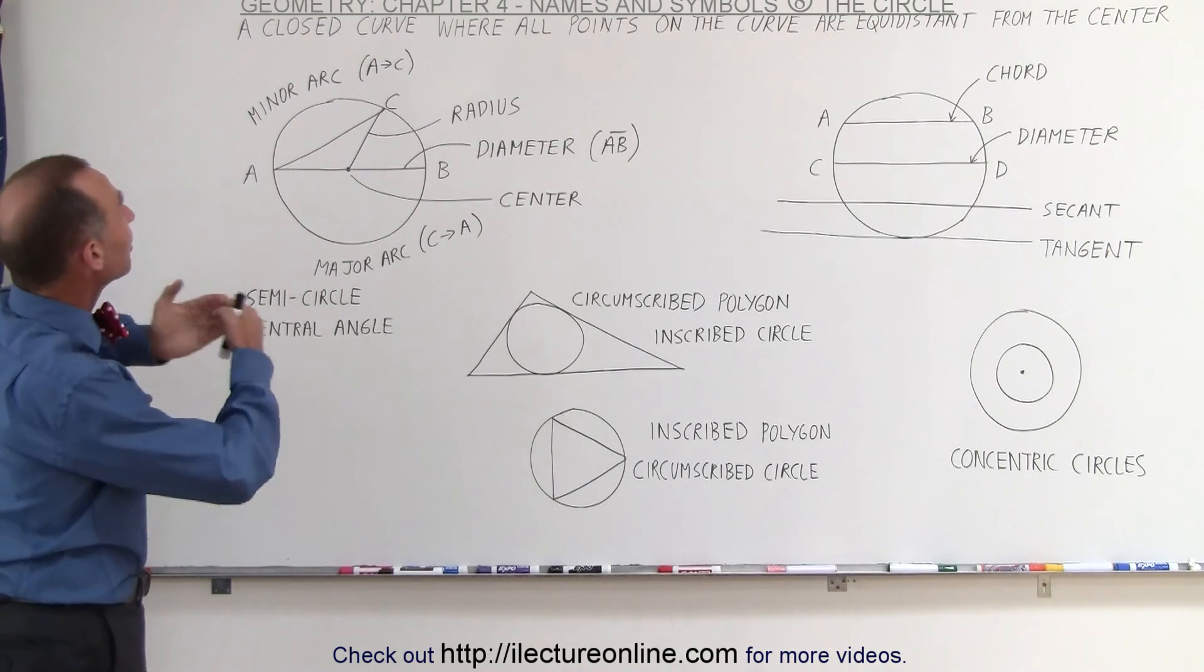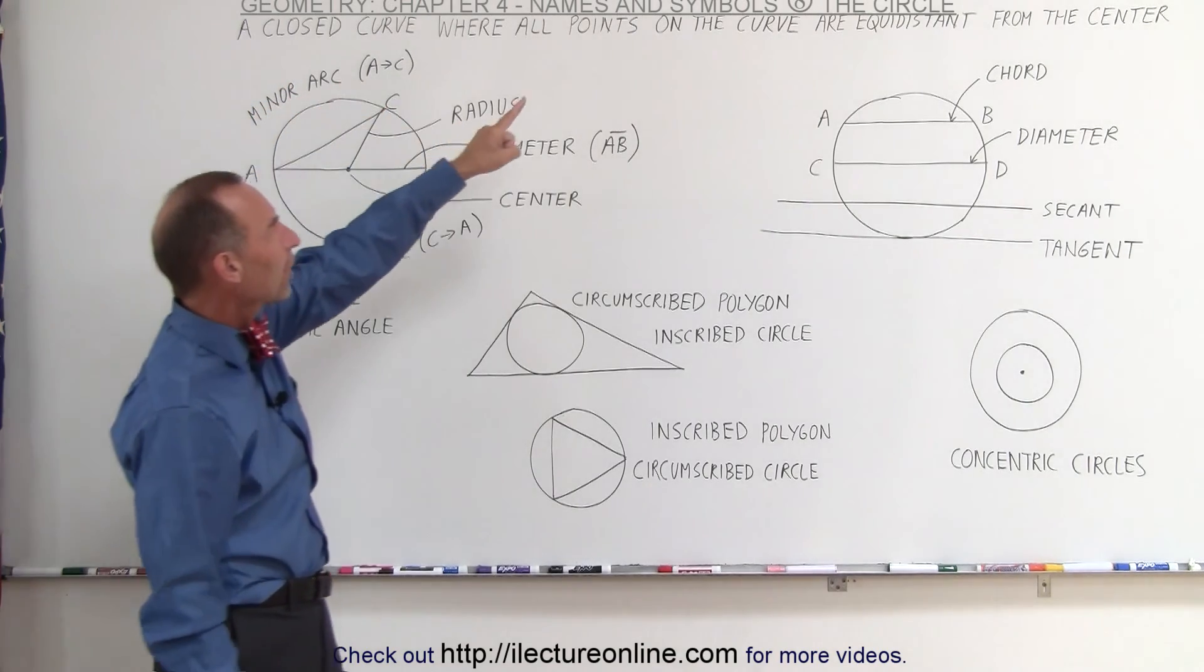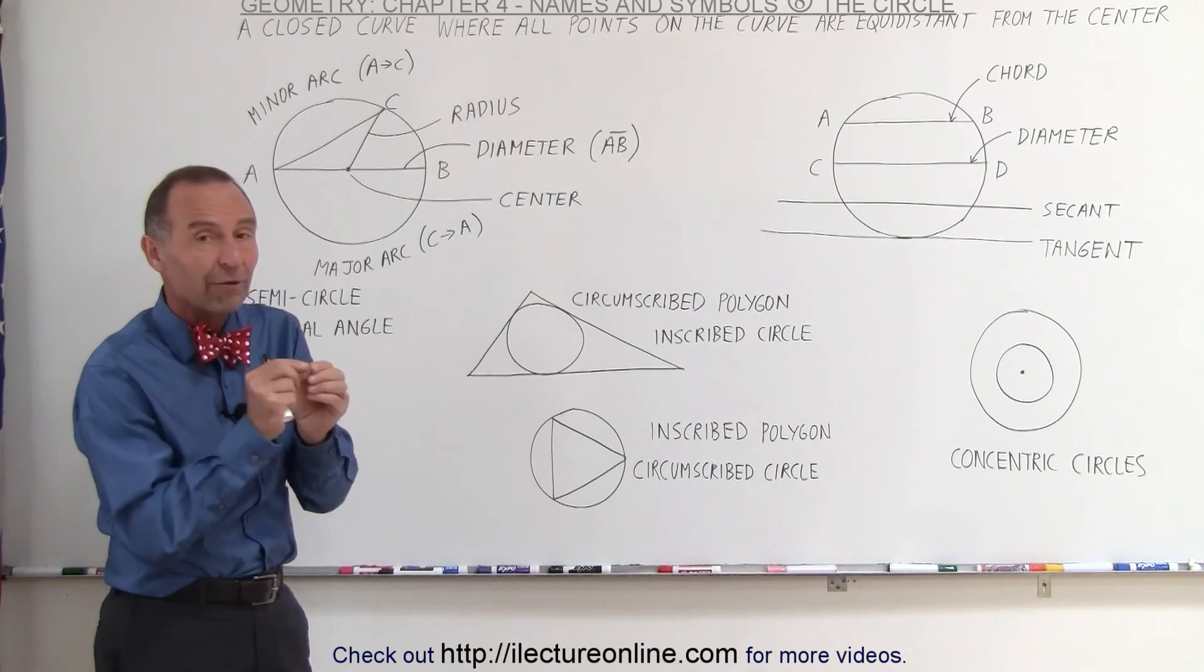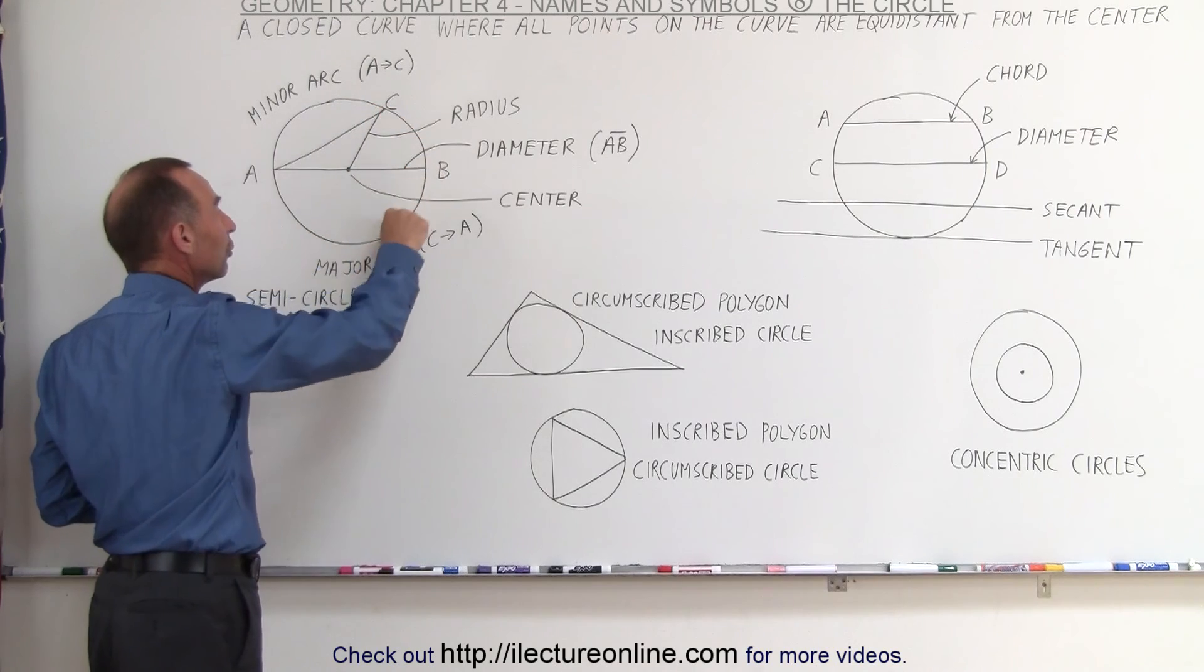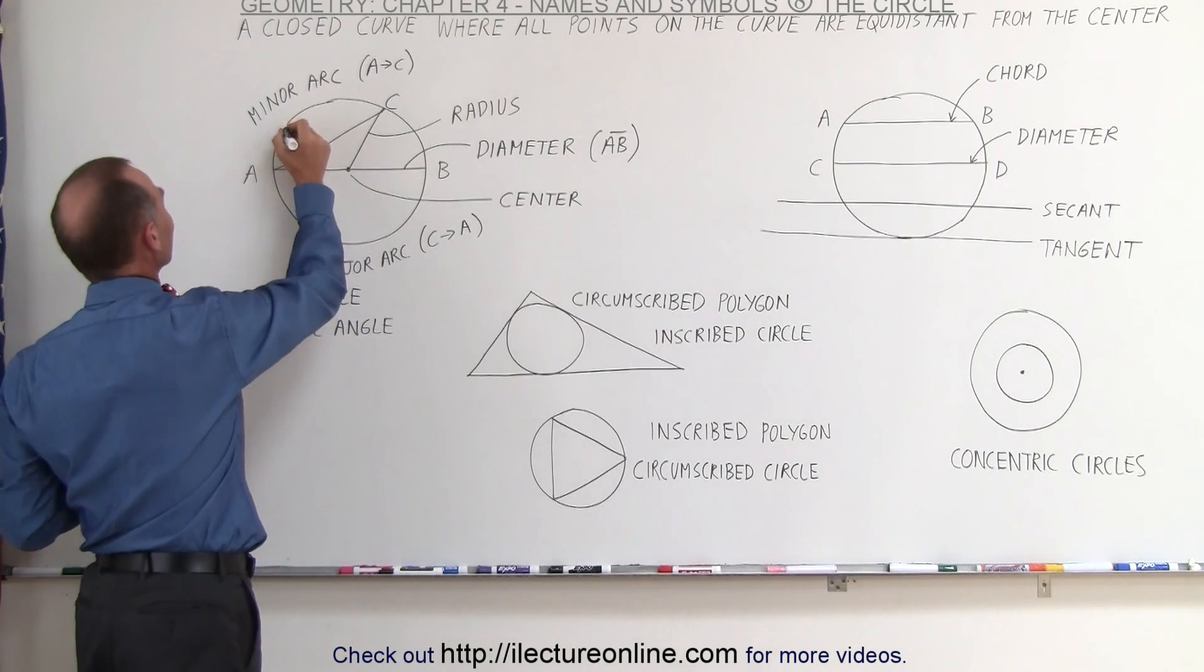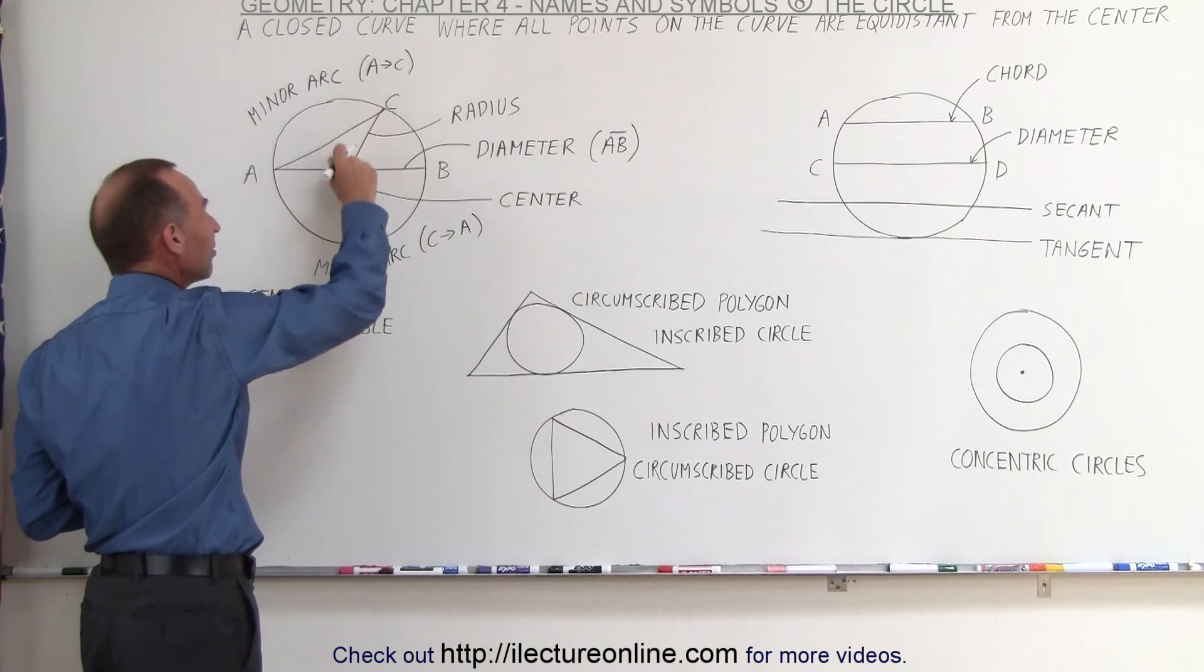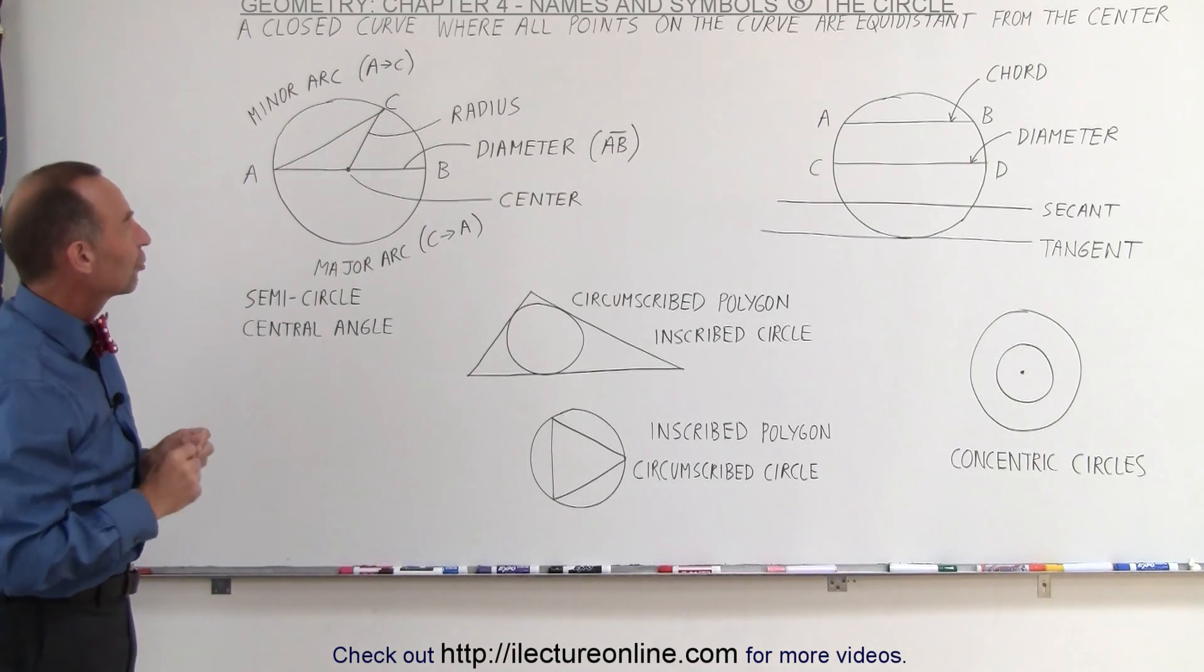Well, first of all, the definition is that it's a closed curve where all the points on the curve are equidistant, meaning the same distance from the center. So we pick a center point and all the points on the curve are the same distance. All the points on the circle are the same distance away from that central point, and that's the definition of the circle.